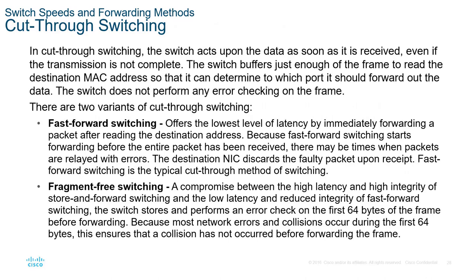In cut-through switching, the switch acts on data as soon as it's received, but may forward corrupt data. There are two variants: fast-forward switching offers the lowest latency by immediately forwarding after reading the destination address. Fragment-free is a compromise — it checks the first 64 bytes of the frame, where most errors typically occur, balancing lower latency with some integrity checking, rather than the full-frame check of store-and-forward.